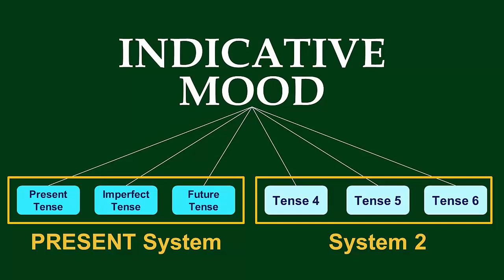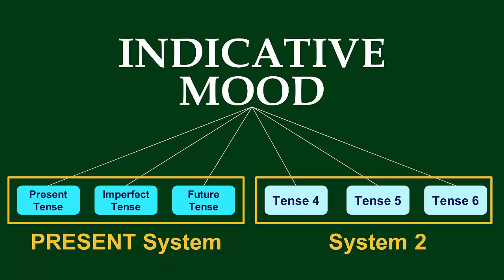At this point, we've said the word 'present' so many times that it barely seems to mean anything anymore. Let's review the terms one more time. We are working within the indicative mood of the verb, which refers to direct speech. There are six tenses of the indicative. Three of these tenses — the present, imperfect, and future — are all united by the fact that they use the same stem: the present stem, which is found by going to the second principal part and chopping off the -re. Together, the present, imperfect, and future tenses form the present system.